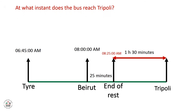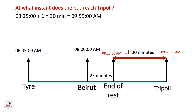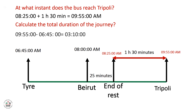At what instant does the bus reach Tripoli? We add the departure time from Beirut plus the duration from Beirut to Tripoli: 8:25 plus 1 hour 30 minutes gives 9:55 a.m. — this is when the bus reaches Tripoli. Finally, we calculate the total duration of the journey by subtracting the final time, 9:55, minus the departure time, 6:45. The answer is 3 hours and 10 minutes.